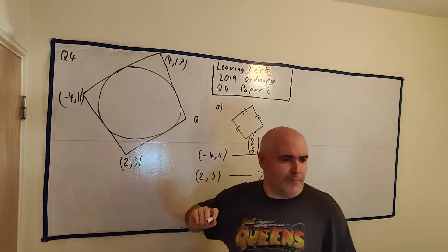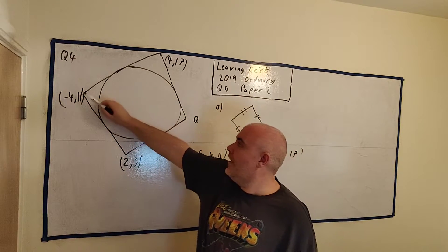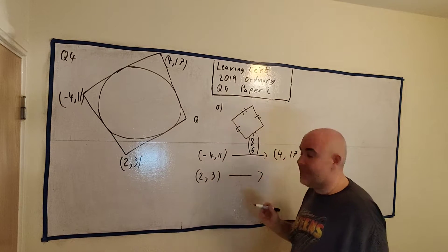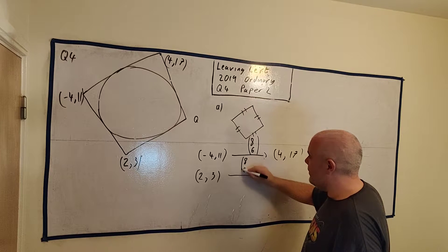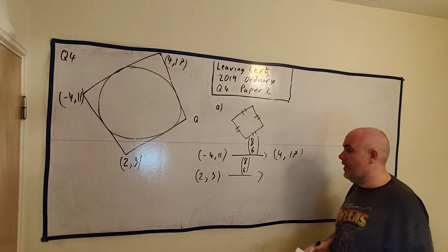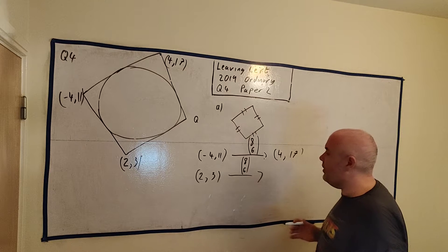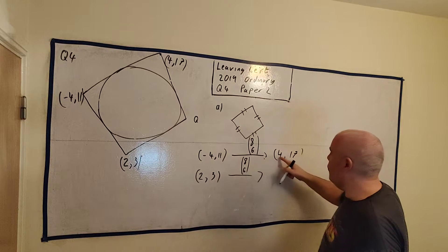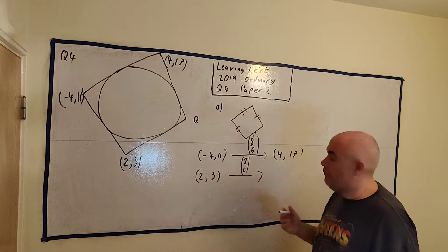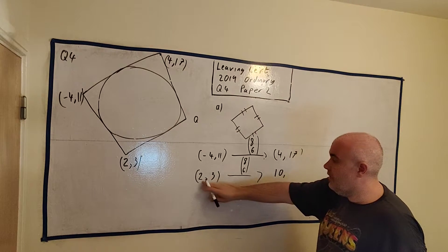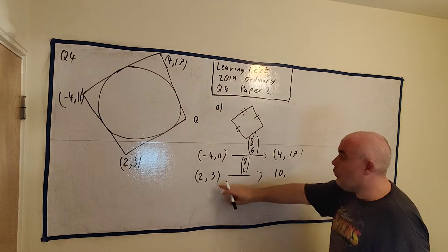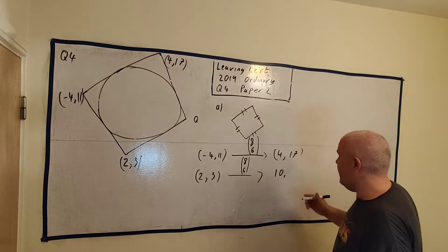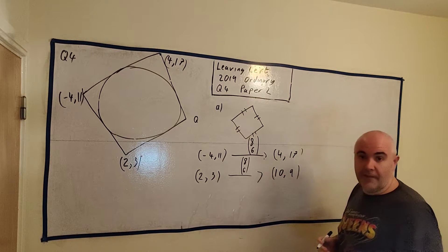If this point - I don't have the letters, I'm sorry - this is S and R. If S moves to R this way, well then P must move to Q the same way. So the same 8 and 6 can be wrote here. Now you don't have to write any of this out, this all could be done in your head if you're quite good at it. So the X moves 8, just like the minus 4 moved 8, this 2 here must move 8, so we get to 10. The Y has to move 6, the 3 has to move 6, 3 plus 6 is 9.